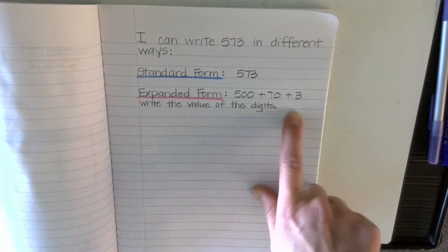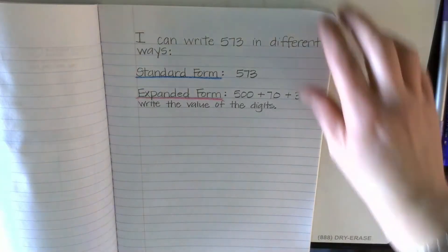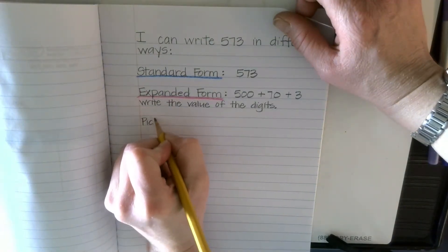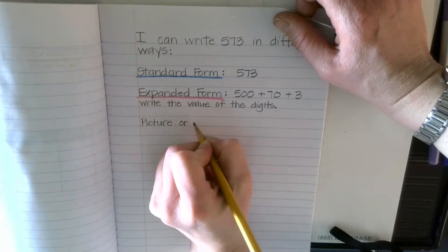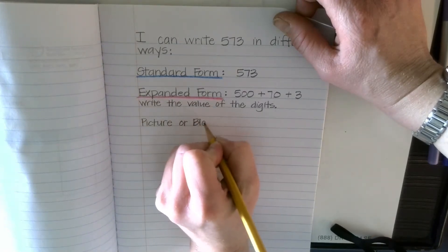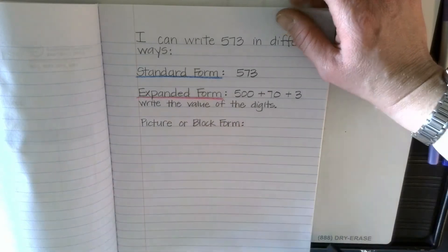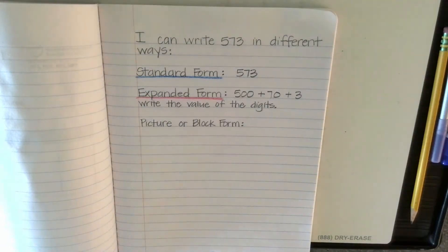And the next form we're going to write is picture or block form. They mean the same thing. I'm going to underline this in green.